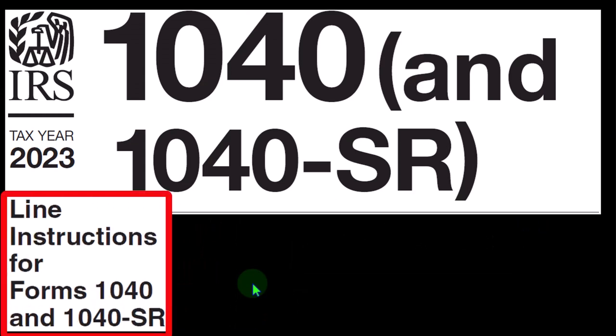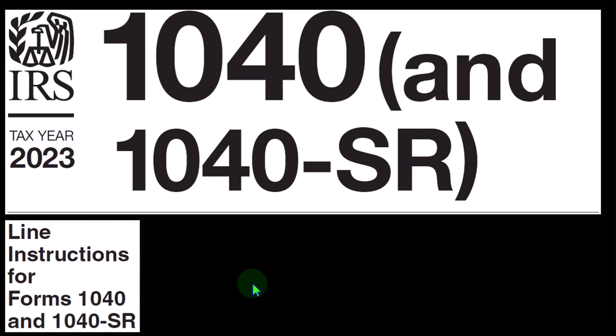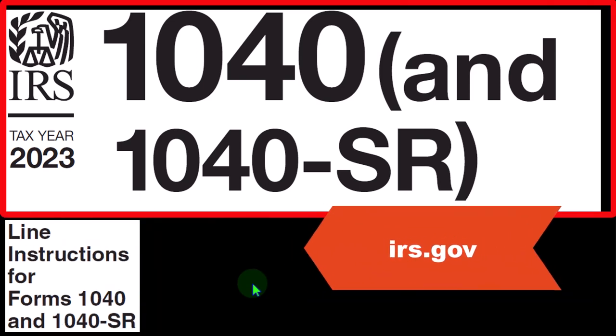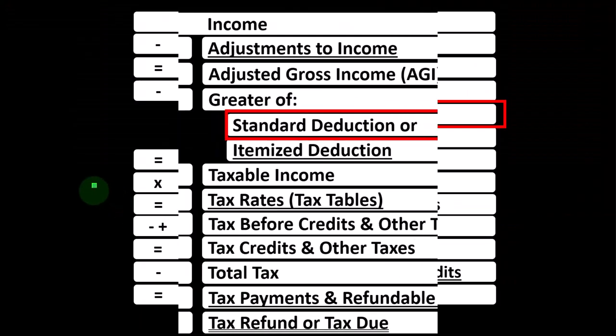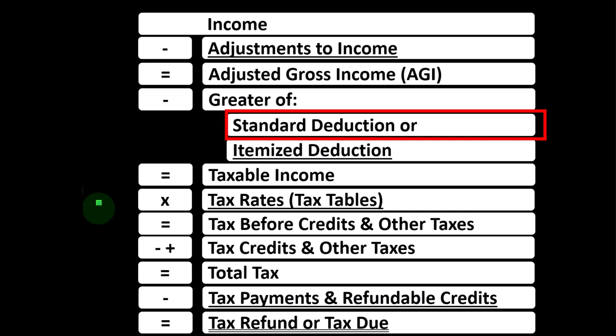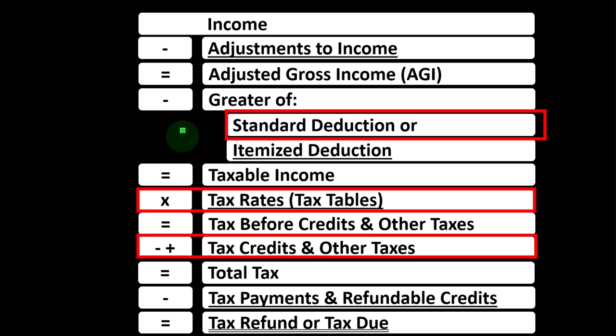Most of this information can be found in the line instructions section of the Form 1040 instructions, tax year 2023, available at irs.gov. Looking at dependents, every time we look at a particular item for income taxes, we want to visualize the income tax formula and think about the primary line items that would be affected.